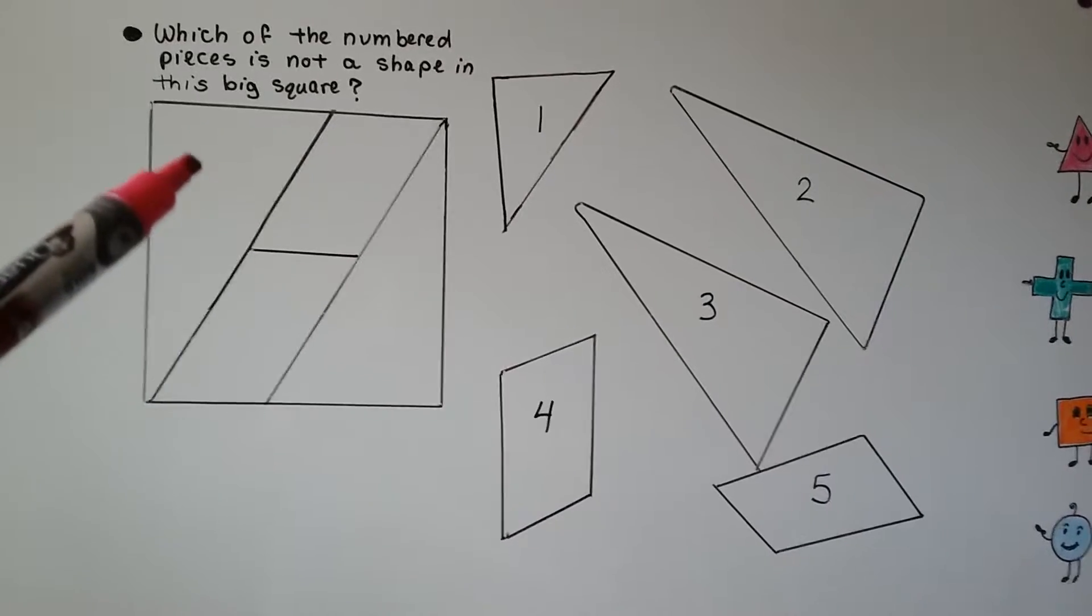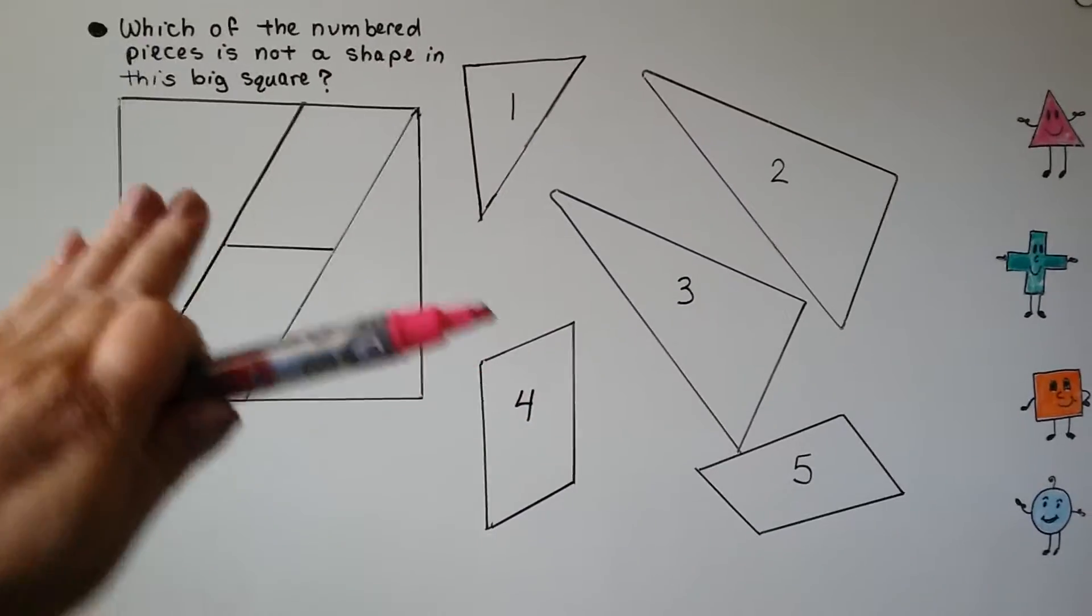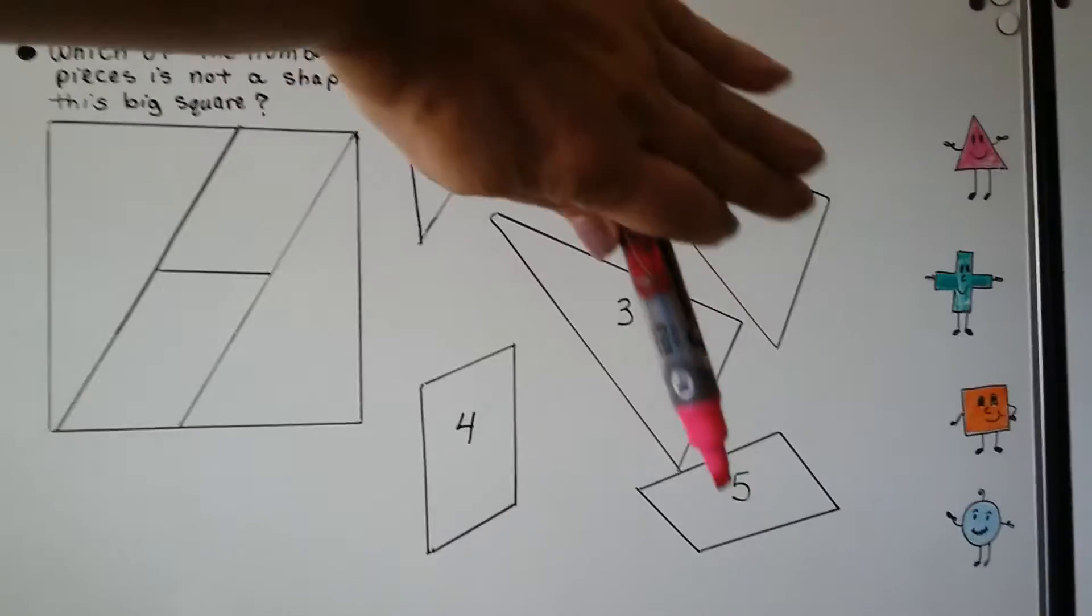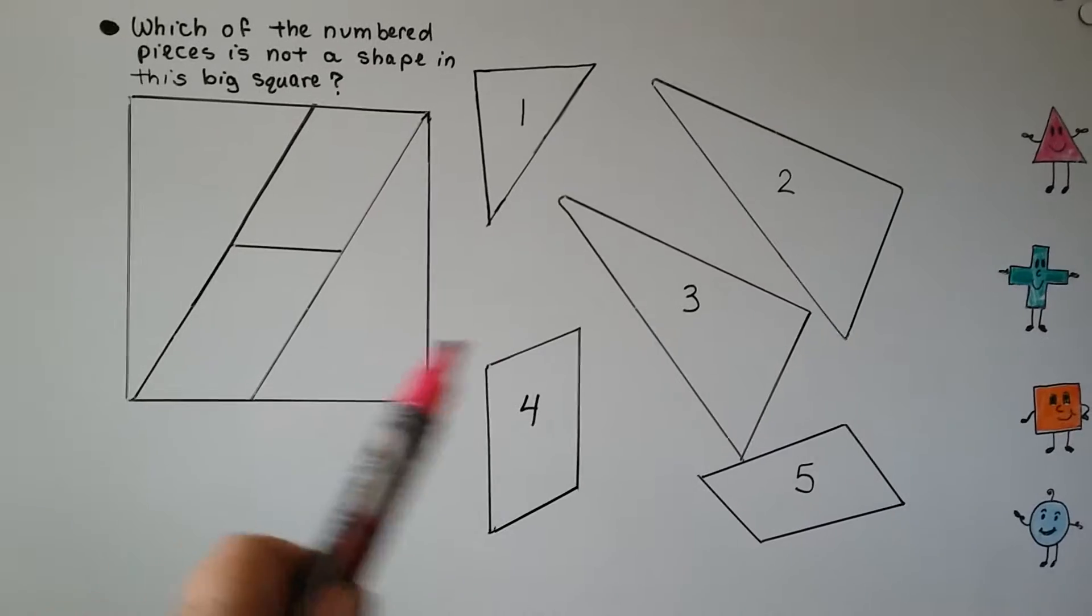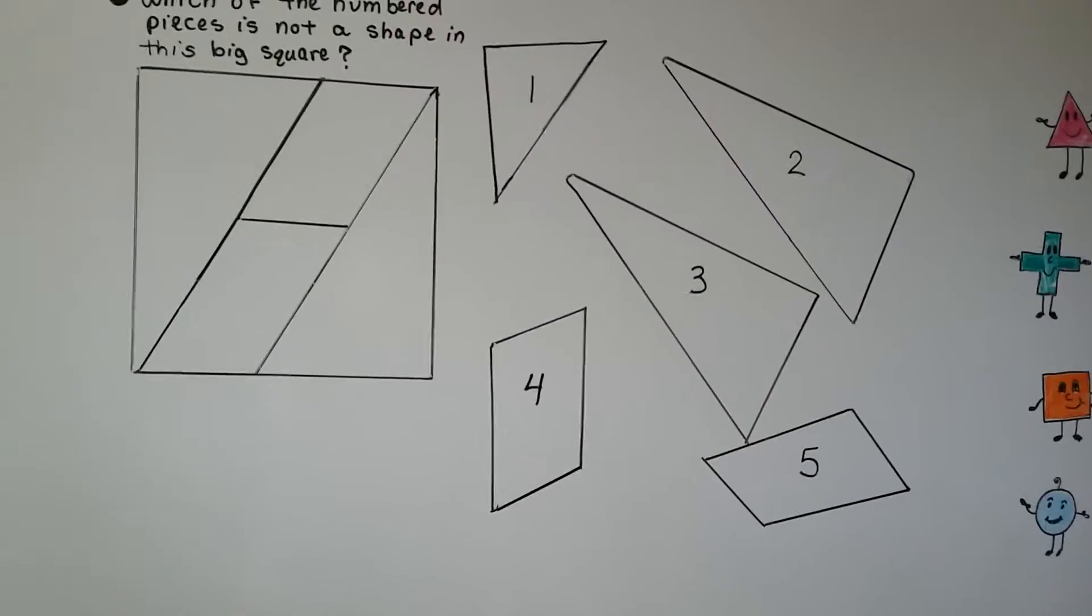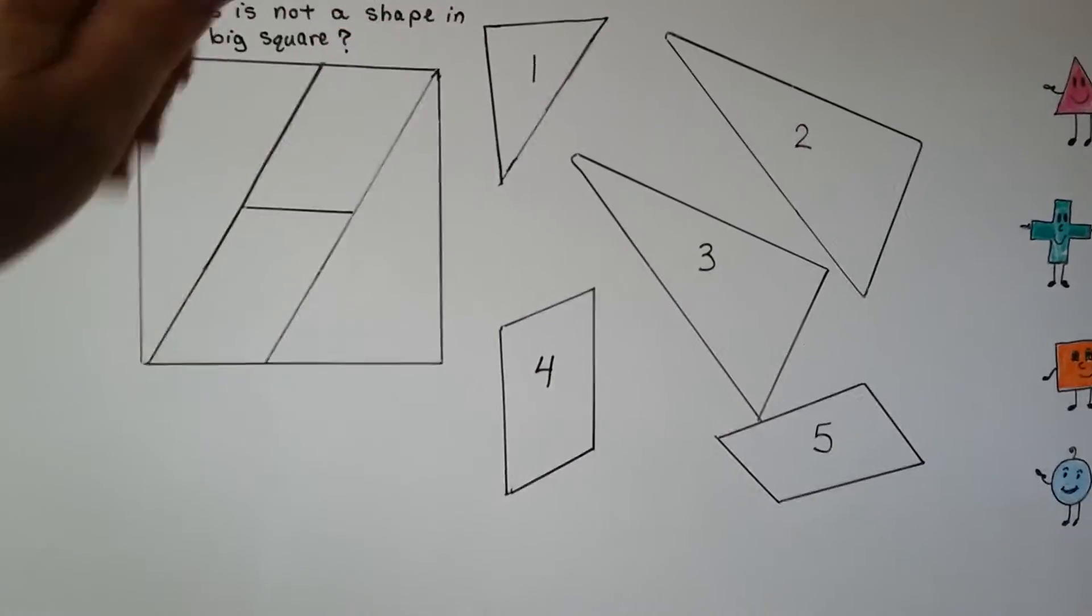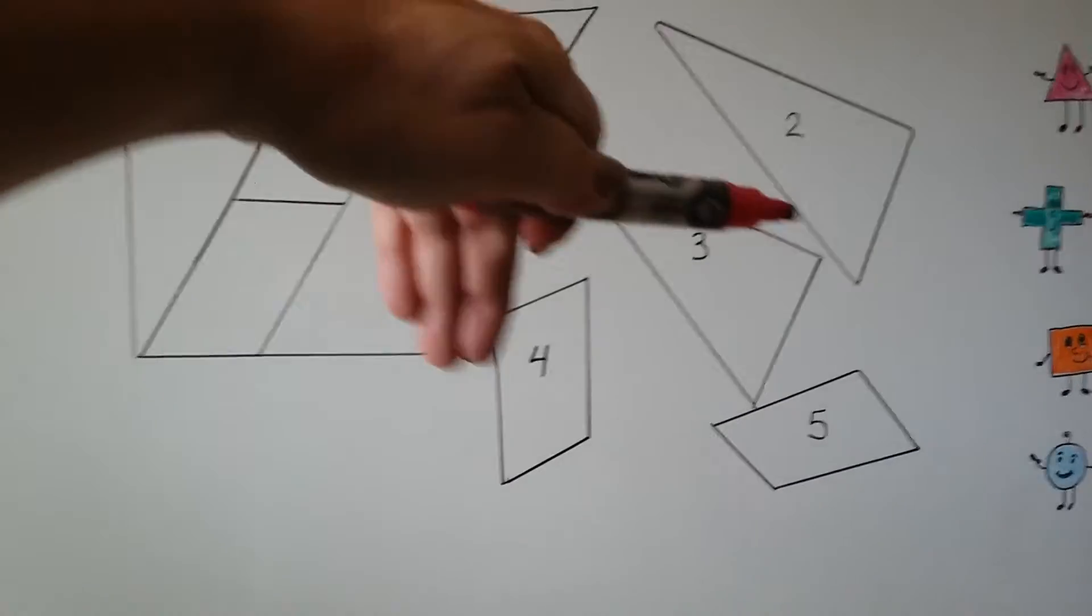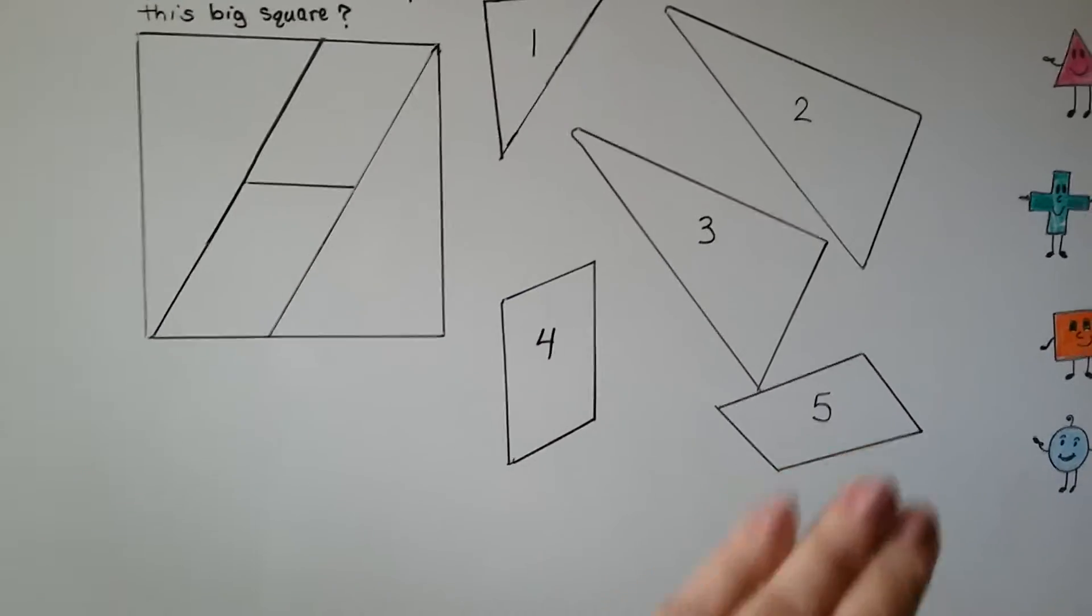So do you see this big triangle? That could be number two, couldn't it? We could have picked it up and just turned it like that. And this one could be number three, right? We could just pick it up and kind of slide it that way. This piece could be number four. It just kind of came down and slid like that. And this one could be number five, right? We can just move it over like that.